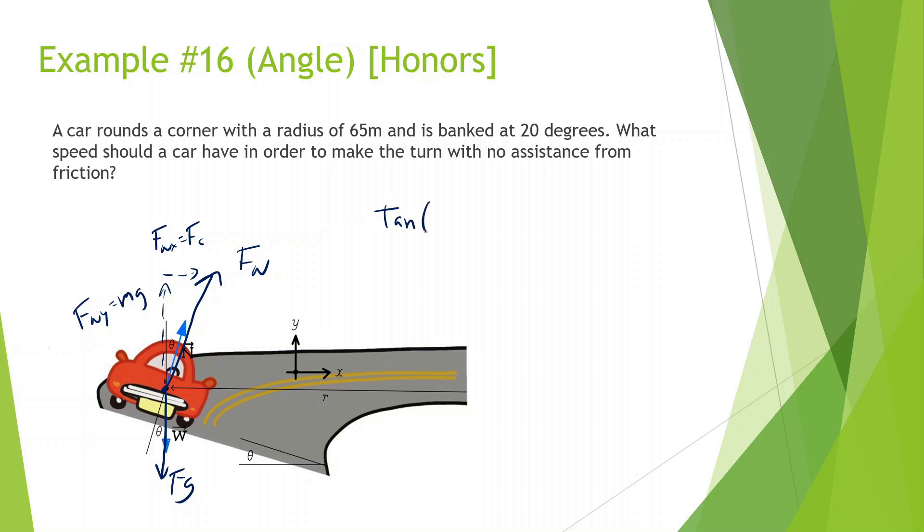So first, let's do tan of 20. This angle is 20 degrees, meaning this angle is also 20 degrees. It's equal to opposite force normal in the x divided by force normal in the y, which is mg. So then we can say force normal in the x is equal to mass, which we don't know, gravity which is 10, times tan of 20, which is 0.36. And we know force normal in the x is equal to centripetal force, mv squared over r. So we're going to do 3.6 times m is equal to mv squared, r being 65. What we notice is m cancels out, and we can find what velocity is. 3.6 times 65, square root of that, and we get 15.3 meters per second.